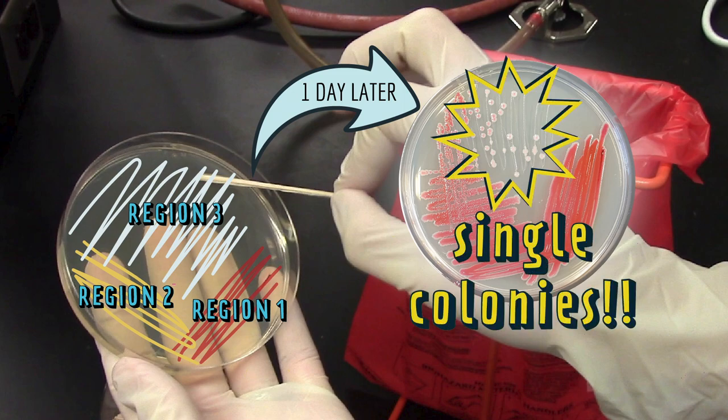By using multiple toothpicks, you can even streak multiple strains for singles on one petri plate. Making multiple overlapping streaks is almost guaranteed to give you single colonies.